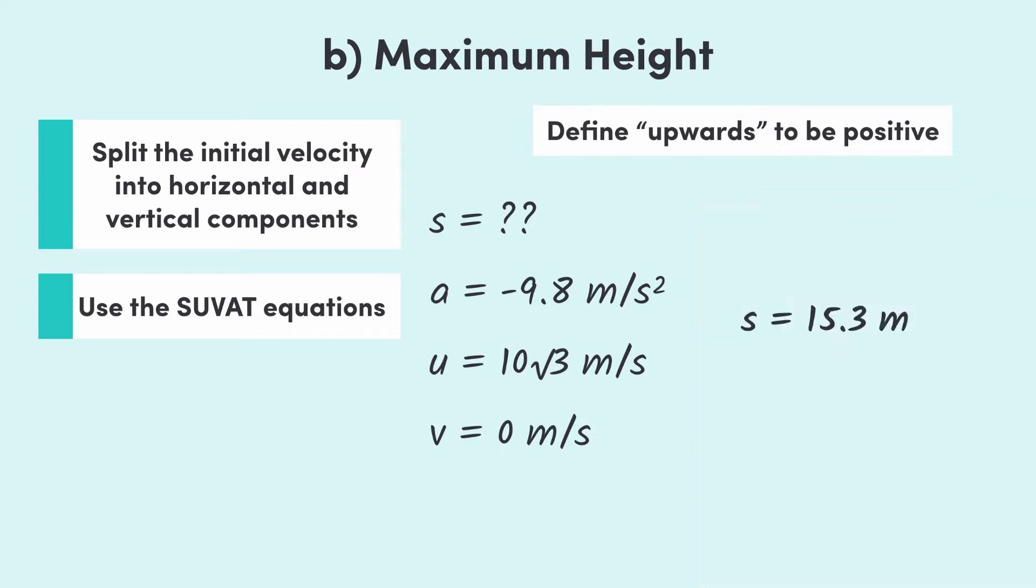Now, the last trick here is that s is only this distance here. So, to find the maximum height above the ground, we have to add the 50 meters here, which gives us s equals 65.3 meters.